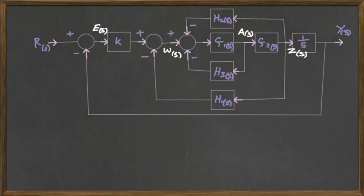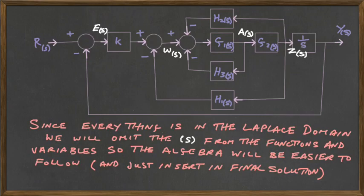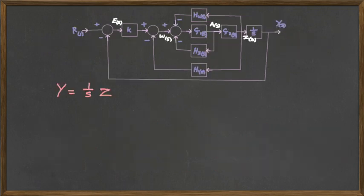So let's take the Z first, and let's relate the Z to the Y. But before we do that, we are going to realize that we can omit writing the brackets with the s next to all the variables, since the entire problem is in the Laplace domain, and it will make the algebra look more confusing. So having said that, what we have done now is we have written Y in terms of Z. The Z passes through the 1 divided by s function to become the Y.